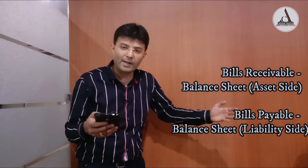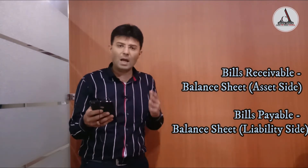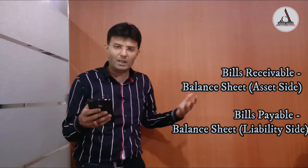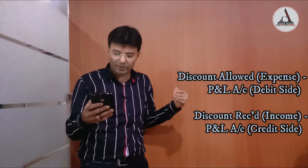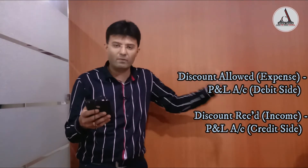Bills receivable is an asset on the right side of the balance sheet. Bills payable is a liability on the left side of the balance sheet. Discount allowed is an expense on the P&L left side. Discount received is income on the P&L right side.